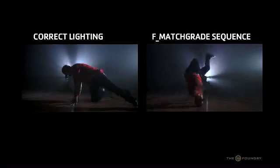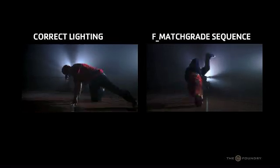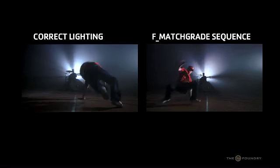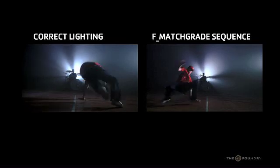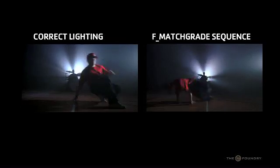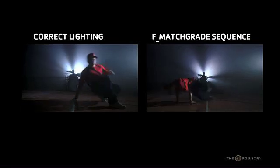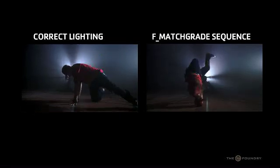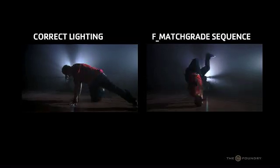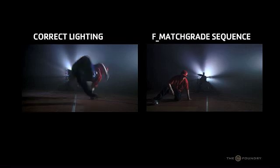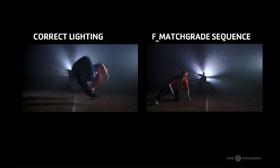If we look at the sequence used to copy the color from — on the left we have the target color, the original sequence the director was happy with, and on the right we have the color corrected MatchGrade render. You can see the MatchGrade node has done quite a good job at matching the histograms and color levels. However, there is a slight difference between the two, and we can improve this using the MatchGrade node's iterations tab.